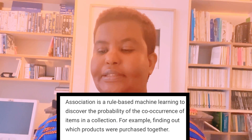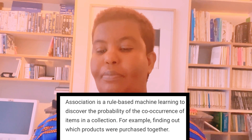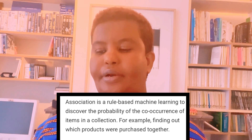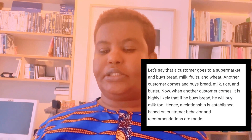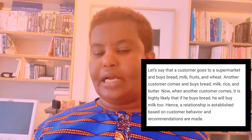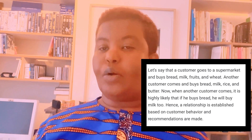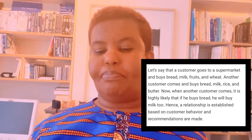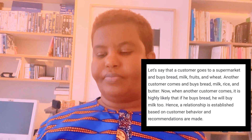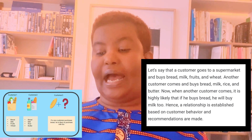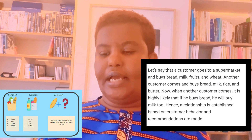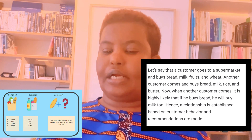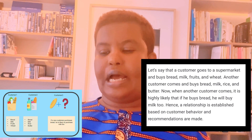Association rule is a rule-based machine learning method to discover the probability of co-occurrence of items in a collection. For example, finding out which products were purchased together. Let's say a customer goes to a supermarket and buys bread, milk, fruit, and wheat. Another customer comes and buys bread, milk, rice, and butter. Now, when another customer comes, it's highly likely that if he buys bread, he will buy milk too. Hence, a relationship is established based on customer behavior and recommendations are made.